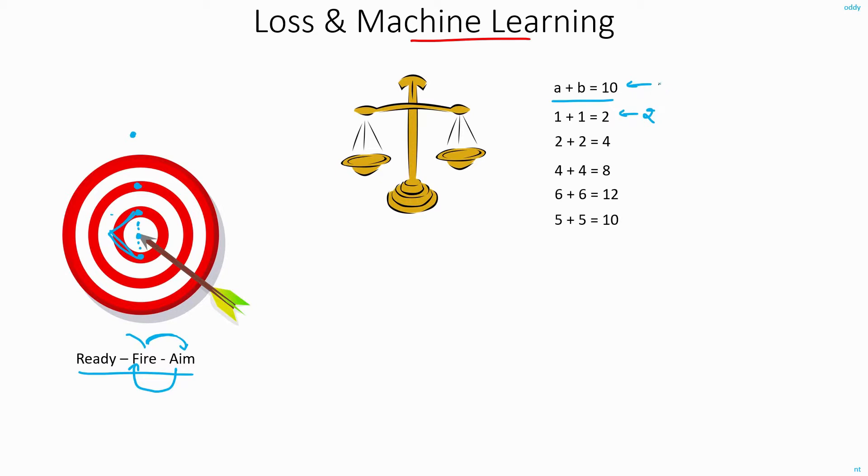Now it knows that the difference between the target and what you achieved is large. That is, the difference is 8. So it slightly increases these two values. Now the difference is 6. And it realizes that it is going in the right direction. So it further increases these values. Now the difference is just 2.